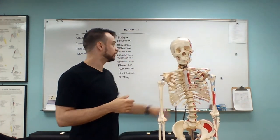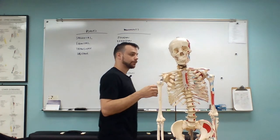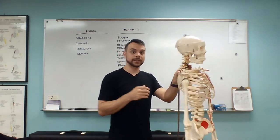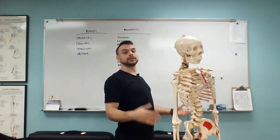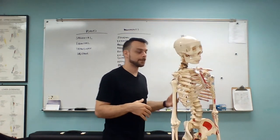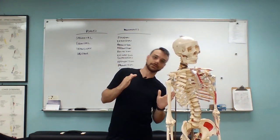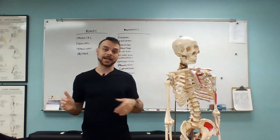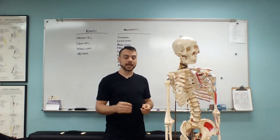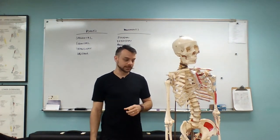When it comes to the trunk of the body, we can have flexion to the front and extension to the back. But when the trunk of the body itself bends to the sides, we call that lateral flexion — lateral meaning to the side. Then we would just denote which side we were flexing to.